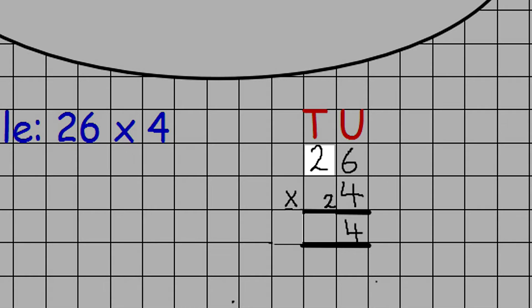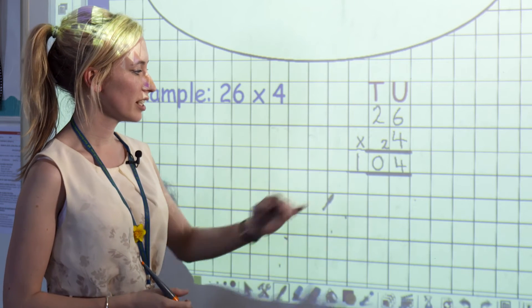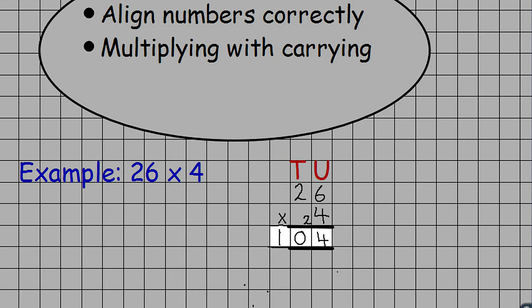4 times 2 is 8, adding on the 2 to give them 10. Again, at this point we remind the children that each number must have their own column. So the children are allowed to extend their equals lines in this case. There is nothing else to do, so they can extend the numbers here to give them 104.